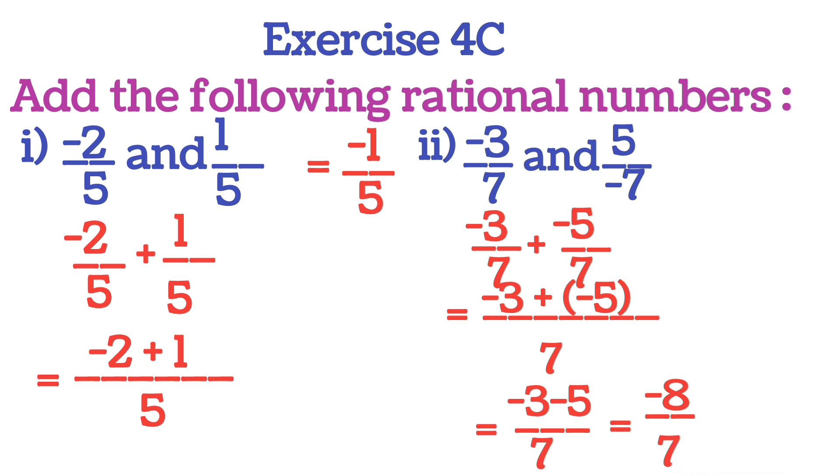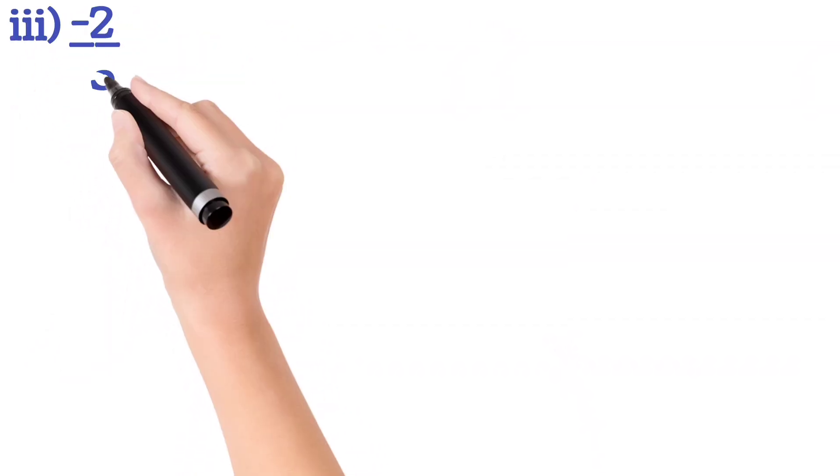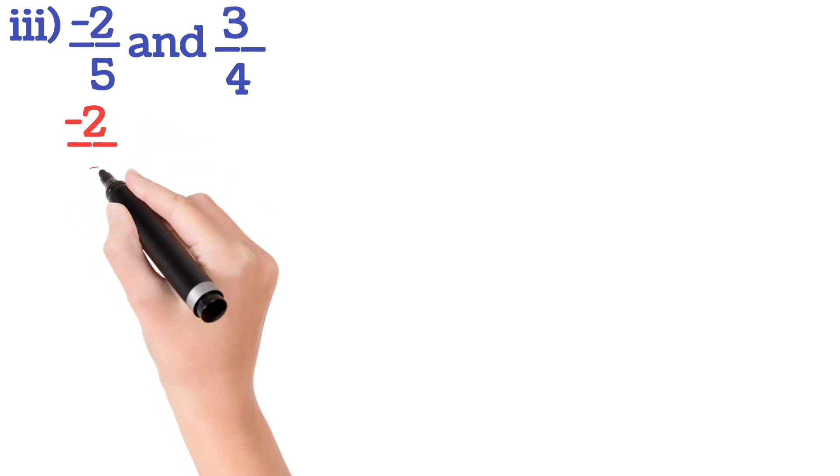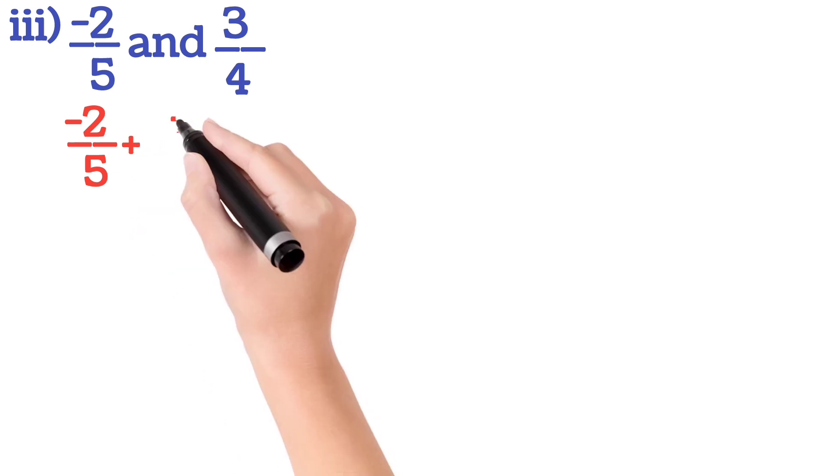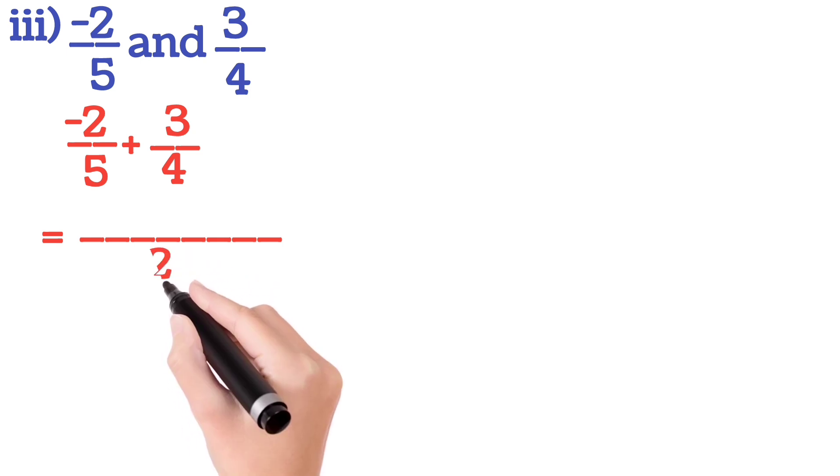Now go for the next sum. Next sum is you will add minus 2 by 5 and 3 by 4. Here the denominators are different, so we will do LCM. First you write minus 2 by 5 plus 3 by 4. All of you know the LCM of 5 and 4 is 20. So you write 20 here.